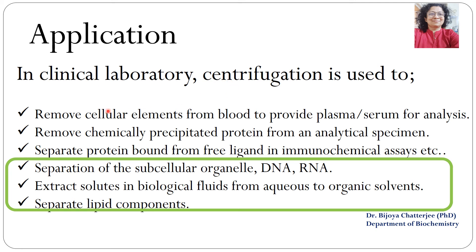Applications of ultracentrifugation in the clinical laboratory include: removing cellular elements from blood (achievable with a normal centrifuge to provide plasma or serum); chemically precipitating protein from analytical specimens (also achievable by normal speed centrifuge); separating protein-bound free ligand in immunochemical assays; separation of subcellular organelles; extraction of solutes from biological fluid; transfer from aqueous to organic solvents; and separating lipid components — the last several requiring high speed centrifuges and ultracentrifuges.